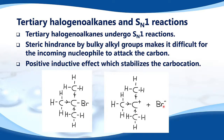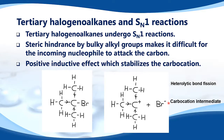There we have the leaving group, which is the bromine ion. We have heterolytic bond fission, which means the bromine takes both electrons from the bond, and we're left with a carbocation intermediate, which is this part here.